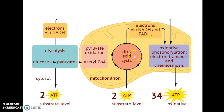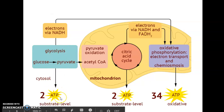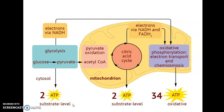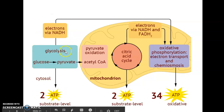Pyruvate oxidation, citric acid cycle, and oxidative phosphorylation. Glycolysis is taking one molecule of glucose and breaking it down into two molecules of pyruvate or pyruvic acid. We also generate two ATP in this process through substrate-level phosphorylation, and this whole process happens in the cytoplasm of the cell.